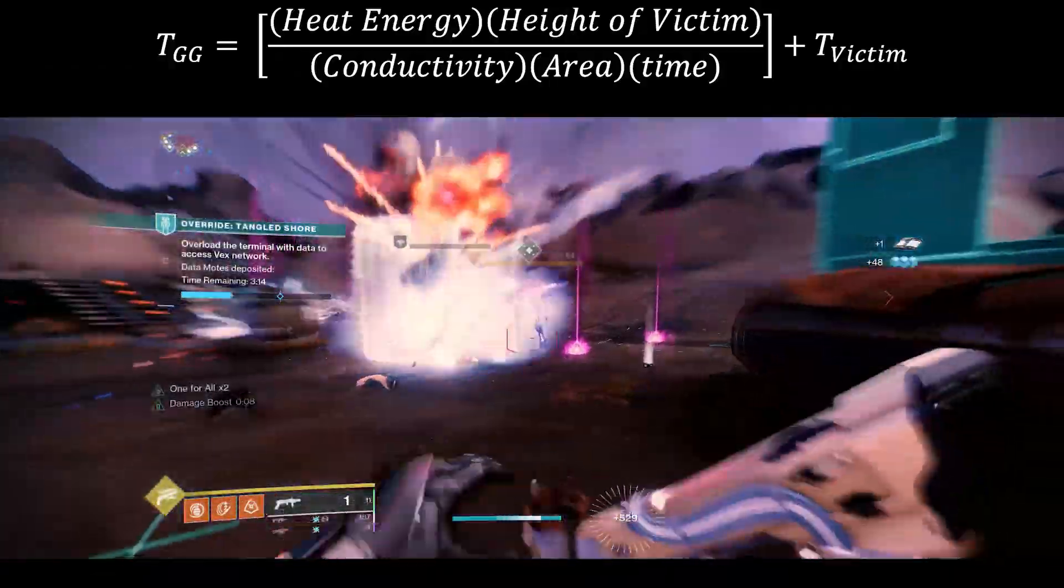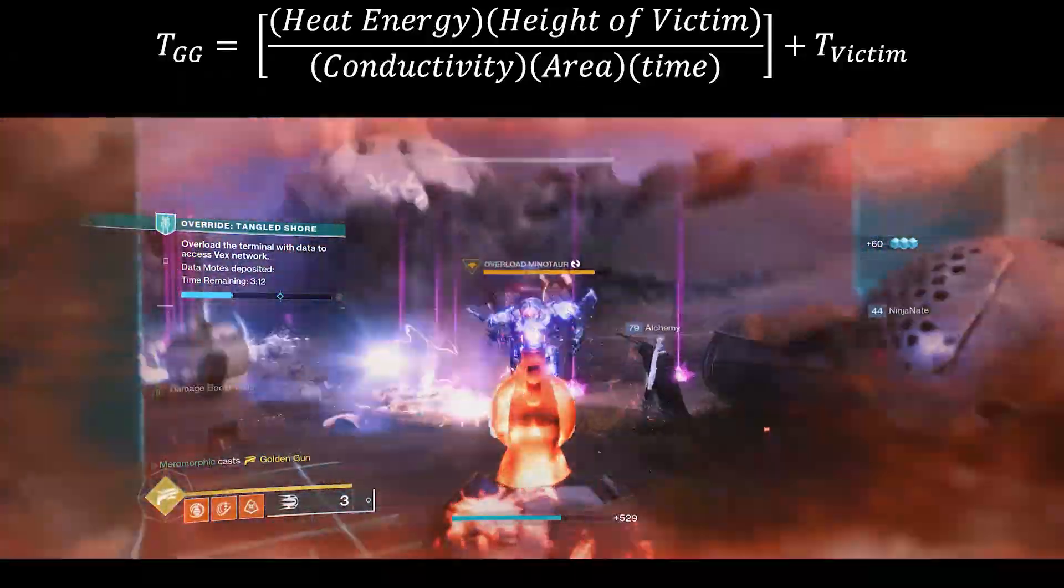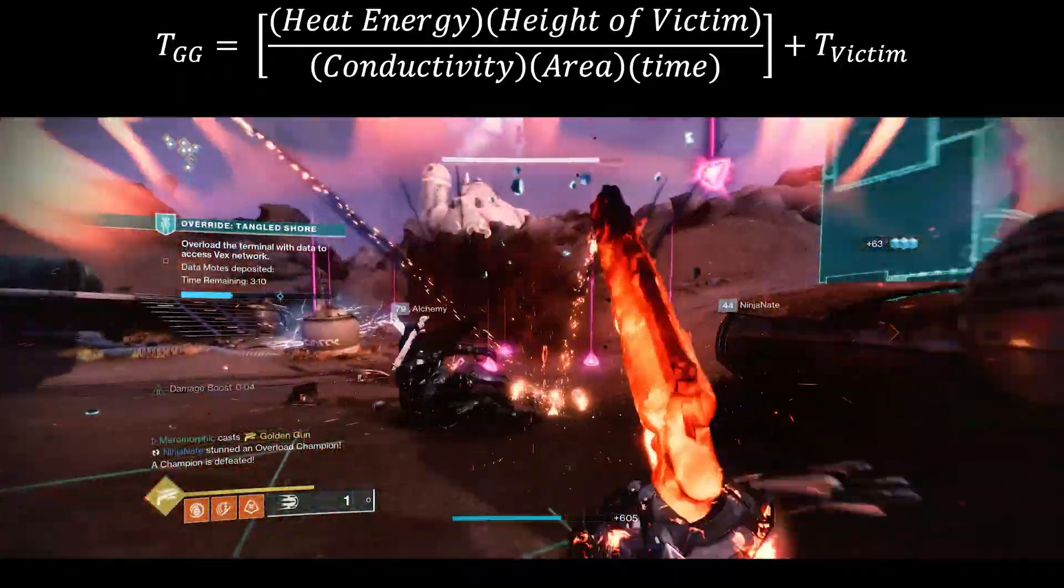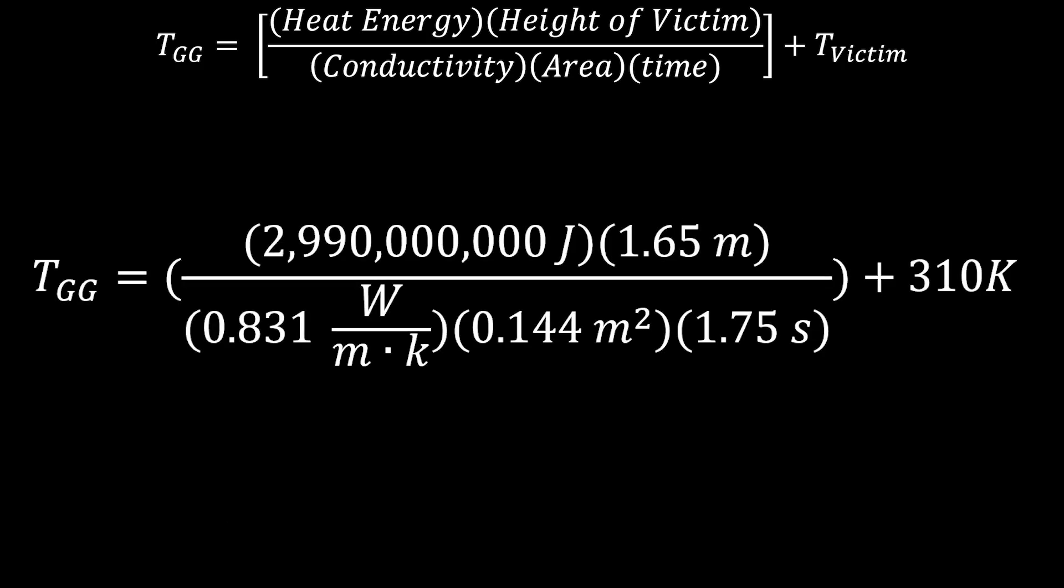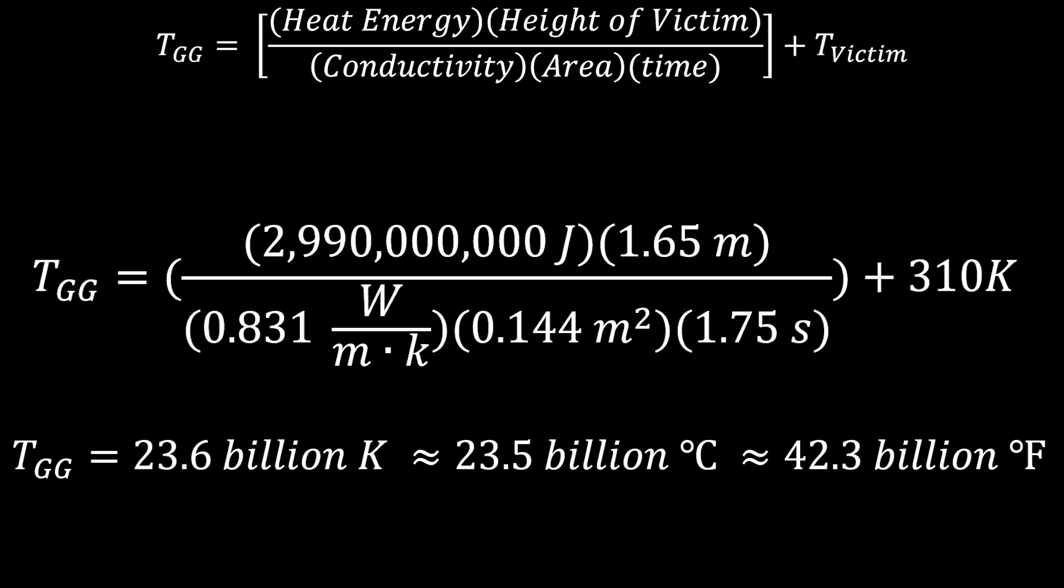So, now we have all the information we need to calculate the temperature of our golden gun shot. And I'll list it all here. All we have to do now is take all of those values and plug them into our main equation, and we get the result of, damn, 23.6 billion, with a B, Kelvin.